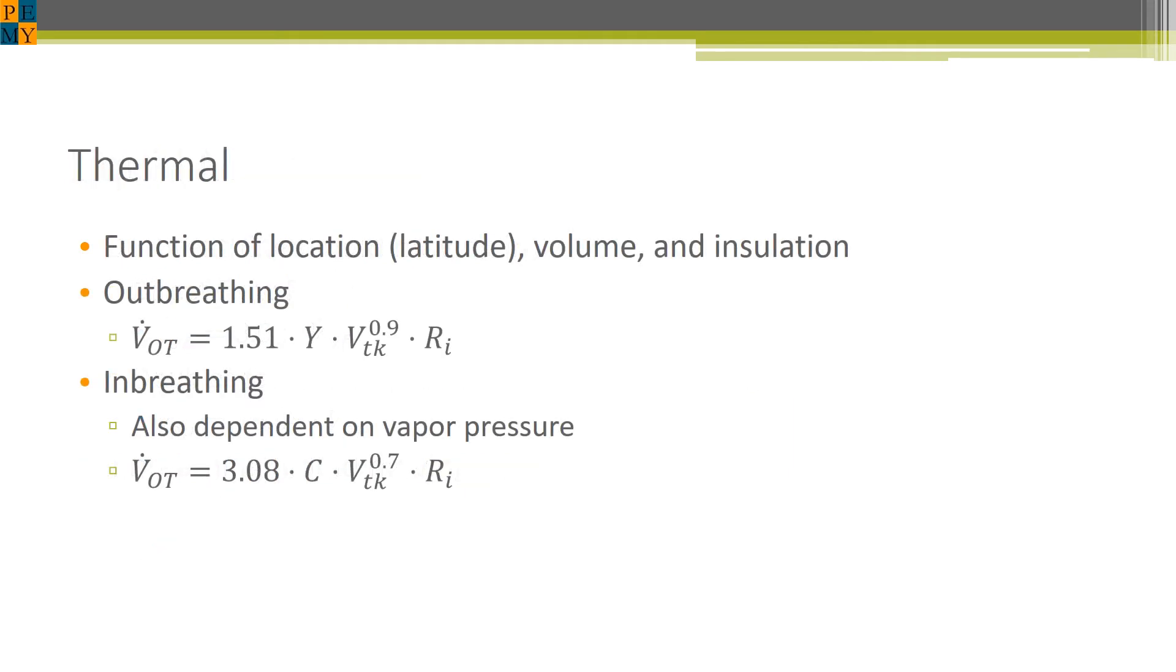For temperature or thermal effects on normal inbreathing and outbreathing, we see that the equations are dependent on the location because these determine the ambient conditions and temperatures of your tank. As an input, the API 2000 uses the latitude to determine where the tank is located. It's also dependent on the volume and insulation of your tank. For inbreathing, it's also dependent on vapor pressure because for volatile products, it can cause additional vapor generation. For these values, we look up in the table in API 2000 what these different parameters are to find these Y factors or C factors. The 1.51 and 3.08 are really unit conversions to help calculate these different values.